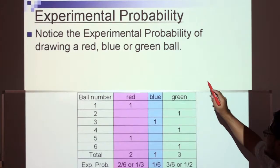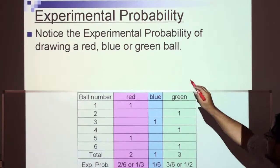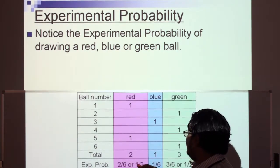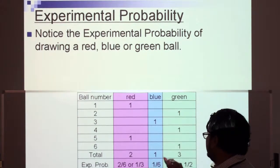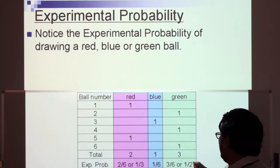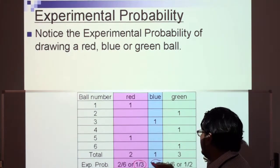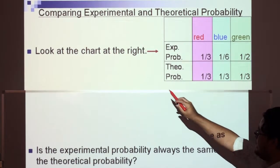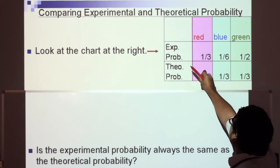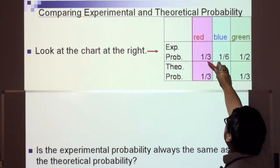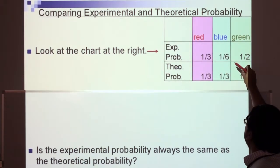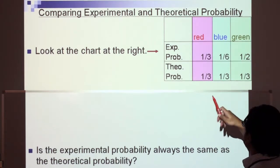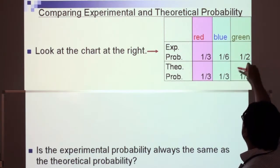Notice the experimental probability of drawing red, blue, or green. When we carried out the experiment, we got two over six for red, one over six for blue, and three out of six — or one half — for green. Comparing experimental and theoretical probability: in theory it should be one third, one third, one third — everything the same. But in this experiment, the experimental and theoretical probabilities of selecting a red ball are equal, while blue got one over six experimentally versus two over six theoretically, and green got one half experimentally versus one third theoretically.